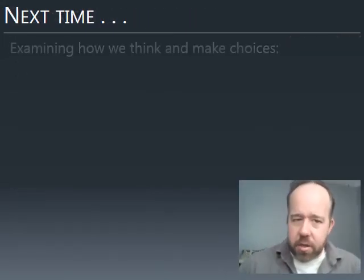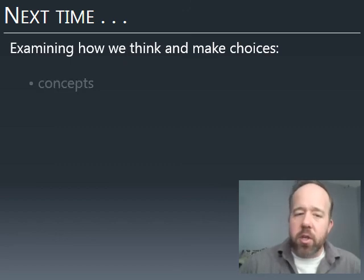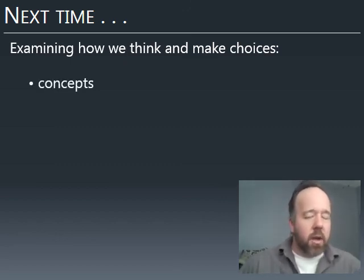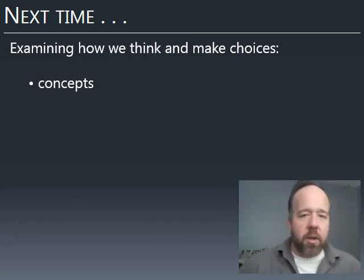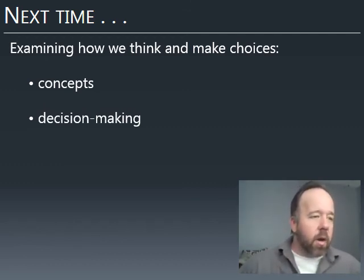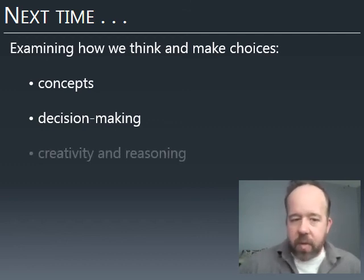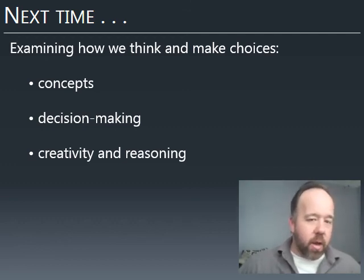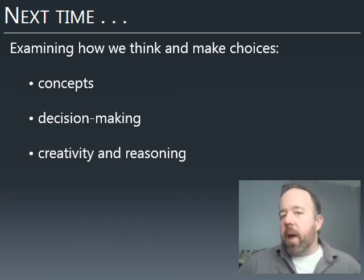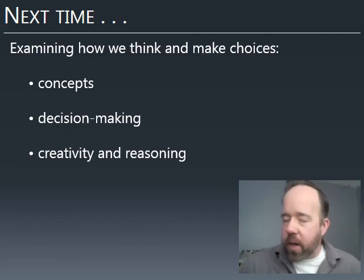That will do it for our unit on consciousness. Next time we'll start looking at thought — how we think and make choices, decision making. We'll start with concepts, how the mind groups similar ideas into abstract concepts, then go into decision making — in particular what mistakes we tend to make, why we make those mistakes, and how we can counteract them. Finally, we'll wrap up with looking at creativity and insight, how we solve problems creatively, and reasoning — how we reach conclusions, make deductions, whether they're valid, and what influences that process.